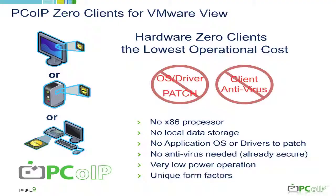Some of the key things about the zero client: it doesn't have an x86 processor, and there's no application OS. That means there are no patch updates to do — no Patch Tuesday, no need to update drivers. You don't need antivirus or spyware. It's just a chip that decodes our PC over IP protocol and it's a very low-power operation. It's future-proof — the graphics can handle high-end graphics today, DirectX 10, DirectX 11, and any future graphics that are coming, like Silverlight or whatever the next-gen Google Chrome is. You don't have to swap out the client because some graphics or application interface changed.